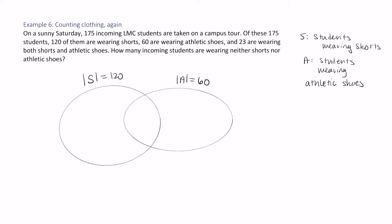We're given one more piece of information: 23 are wearing both shorts and athletic shoes. And that's in here. The size of S intersect A is equal to 23. There are 23 students in this intersection.